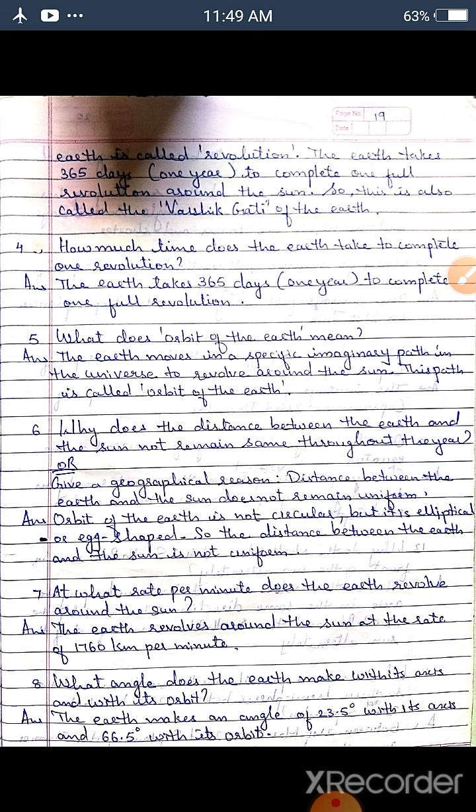Question 4: How much time does the earth take to complete one revolution? Answer: The earth takes 365 days (one year) to complete one full revolution. Question 5: What does 'orbit of the earth' mean? Answer: The earth moves in a specific imaginary path in the universe to revolve around the sun. This path is called the 'orbit of the earth'.